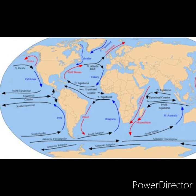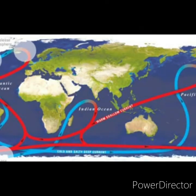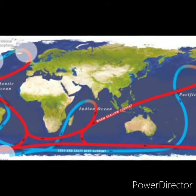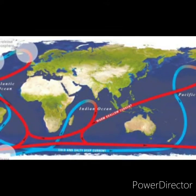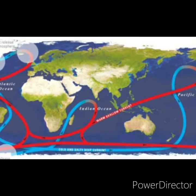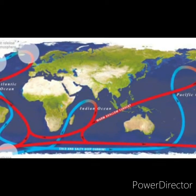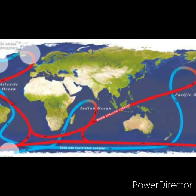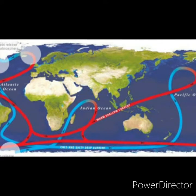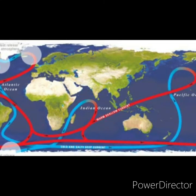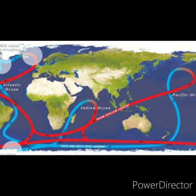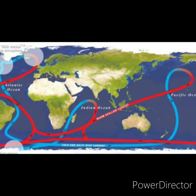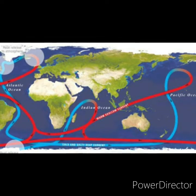The Gulf Stream warm current confluences with the Labrador current, producing heavy fog along the coast of Newfoundland, which is known as the fishing ground of the world. The North Atlantic Drift warm current keeps ports at higher latitudes ice-free throughout the year. The Labrador cold current's confluence with the Gulf Stream creates fog and hinders navigation.